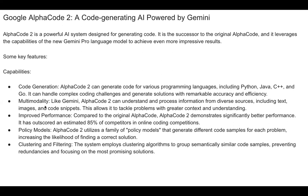Since AlphaCode 2 is powered by Gemini, it can also understand and process information from diverse sources — you can give it a problem statement in text, images, or code snippets, and it'll generate a complex program for you. AlphaCode 2 demonstrates significantly better performance and has outscored an estimated 85% of competitors. It employs clustering algorithms to group semantically similar code, preventing redundancies and focusing on promising solutions.